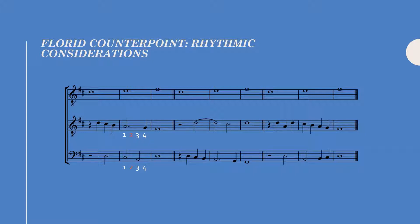In contrast, beat three is marked by an A and beat four by a quarter note G, and thus are properly treated. You always have to have some sort of rhythmic activity going on in each beat, while of course following the rhythmic guidelines I outlined in my two-part video. But because beats one and two are improperly treated, this first example is a no-go.